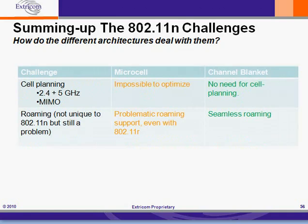Regarding cell planning: we discussed the challenge of cell planning at 2.4 and 5GHz and the added challenge of MIMO, and it's pretty clear that it's impossible to get to an optimal cell plan in a microcell environment when you have to take into account those two issues. In the channel blanket, the story is 180 degrees different — there's no need for cell planning, and therefore that challenge just goes away. Finally, roaming, which is not unique to 802.11n but is a very important issue in an 802.11n context, is problematic in a microcell environment even with 802.11r. The disconnections that can occur as the client moves through a microcell environment are significant, whereas in a channel blanket the user is going to experience seamless roaming.